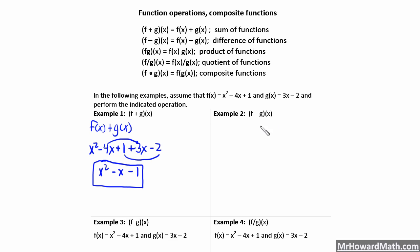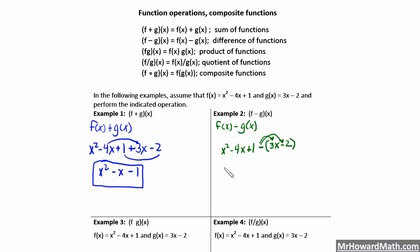We have f minus g of x. We're going to take our f of x function and subtract our g of x function from it. So we have x squared minus 4x plus 1, and we subtract the quantity 3x minus 2 — we need to distribute the negative in. That gives us x squared minus 4x plus 1 minus 3x plus 2. Combining like terms: x squared, minus 4x minus 3x is minus 7x, and 1 plus 2 is plus 3. Final answer: x squared minus 7x plus 3.